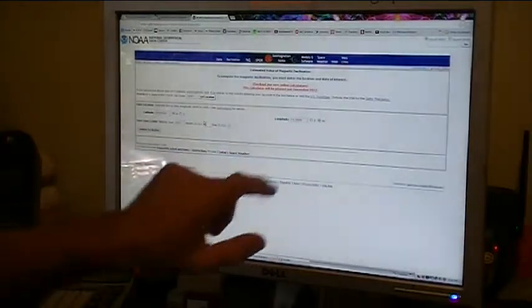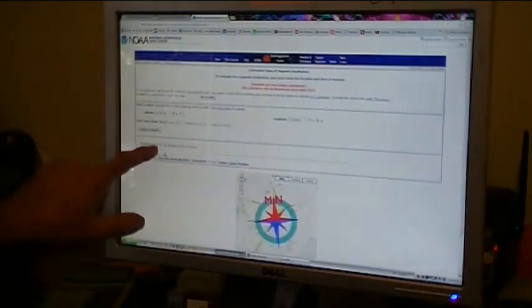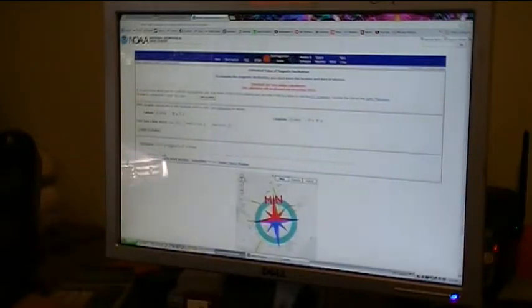Now I have my latitude and my longitude, which is really cool. And then I can compute the declination. And there it is. 8 degrees, 27 minutes west. So that will help me line up my sundial without having to use the North Star if I wanted to line it up during the daytime.